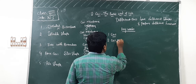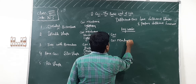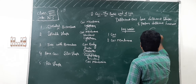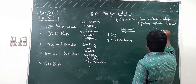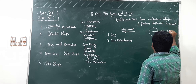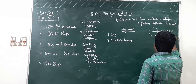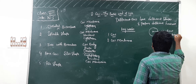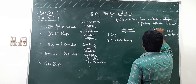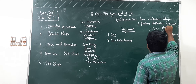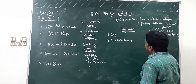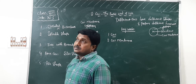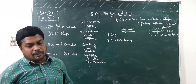The next keyword is cell membrane. In a cell, the center portion is called the nucleus, the cover is called the cell membrane, and the jelly-like substance is called cytoplasm. Cell membrane is also called plasma membrane.